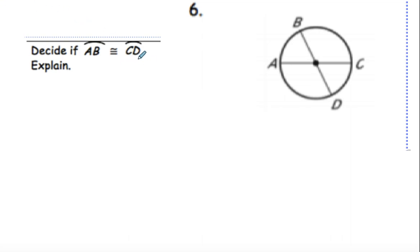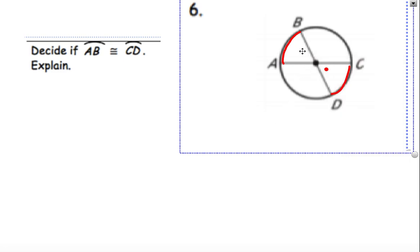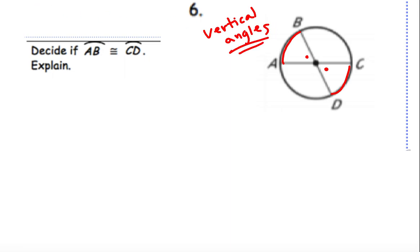Decide if arc AB is congruent to arc CD. Their central angles are equal because, thinking back to when we did quadrilaterals and other angles, these are vertical angles. You will see vertical angles in circles, and vertical angles are always congruent.